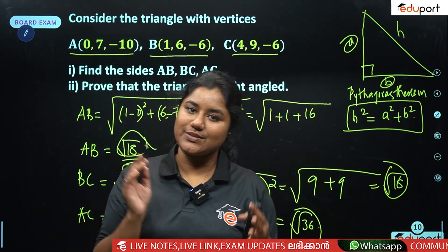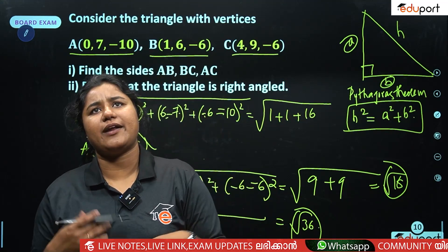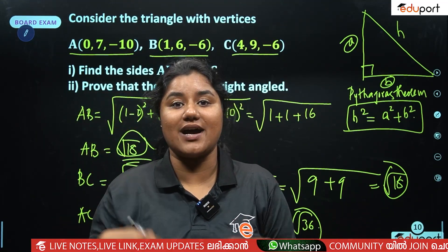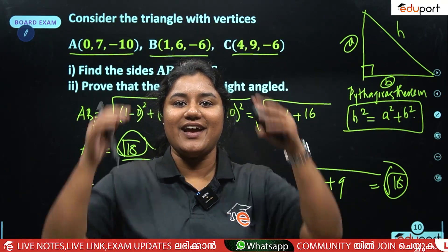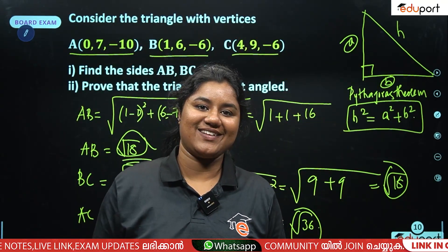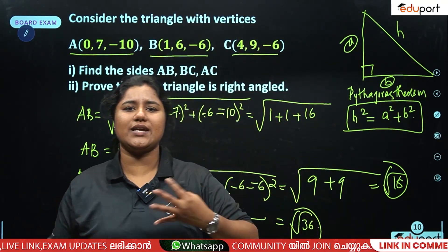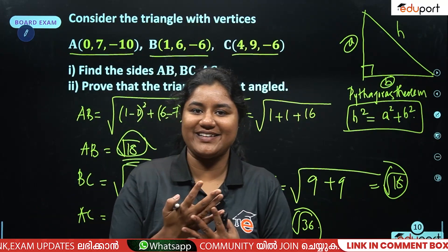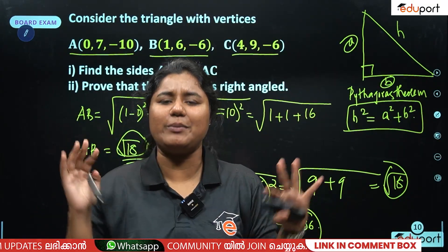For an isosceles triangle, two sides are equal. For a parallelogram, opposite sides are equal. If the logic and the question-answer approach are applied correctly, we can verify these properties using the distance formula.